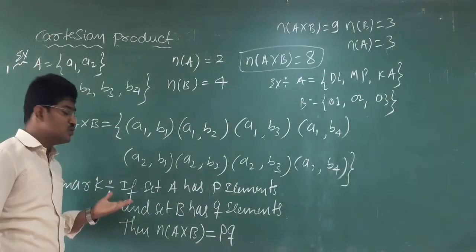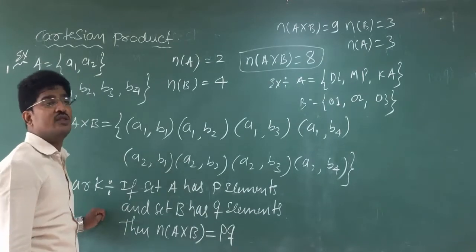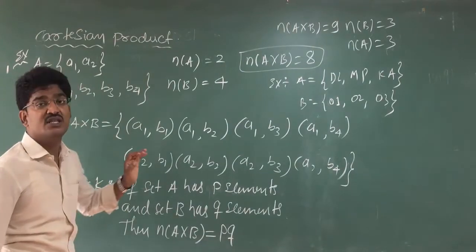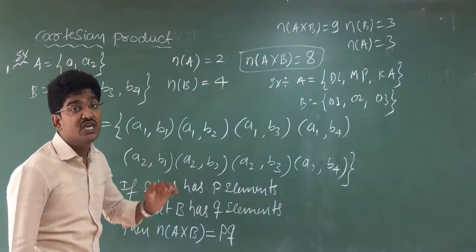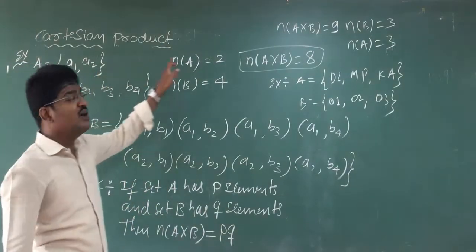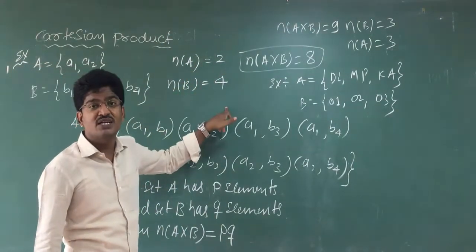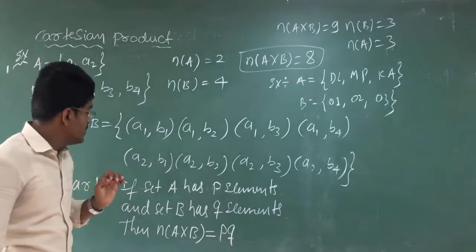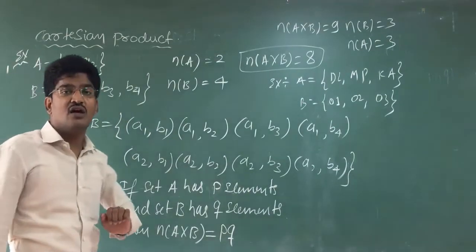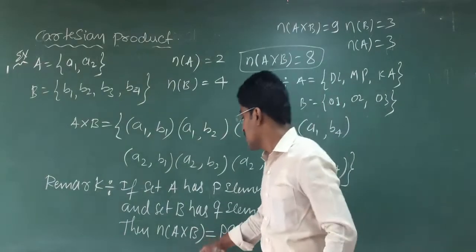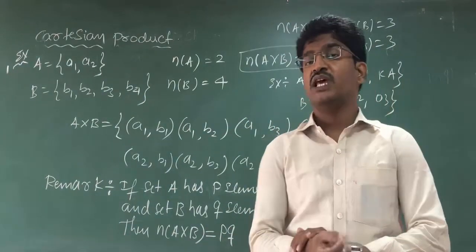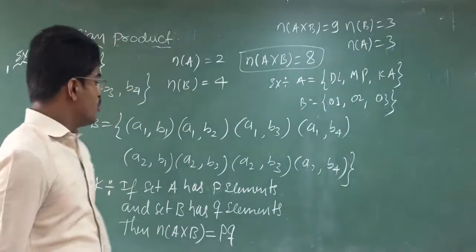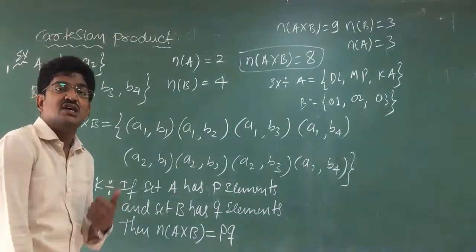This is how we come to our first remark. A has p elements, B has q elements, A cross B has p×q elements. For example, A has 2 elements, B has 4 elements, A cross B has 8 elements. Please understand and remember this remark — it is very important. Now let us go to the next remark.